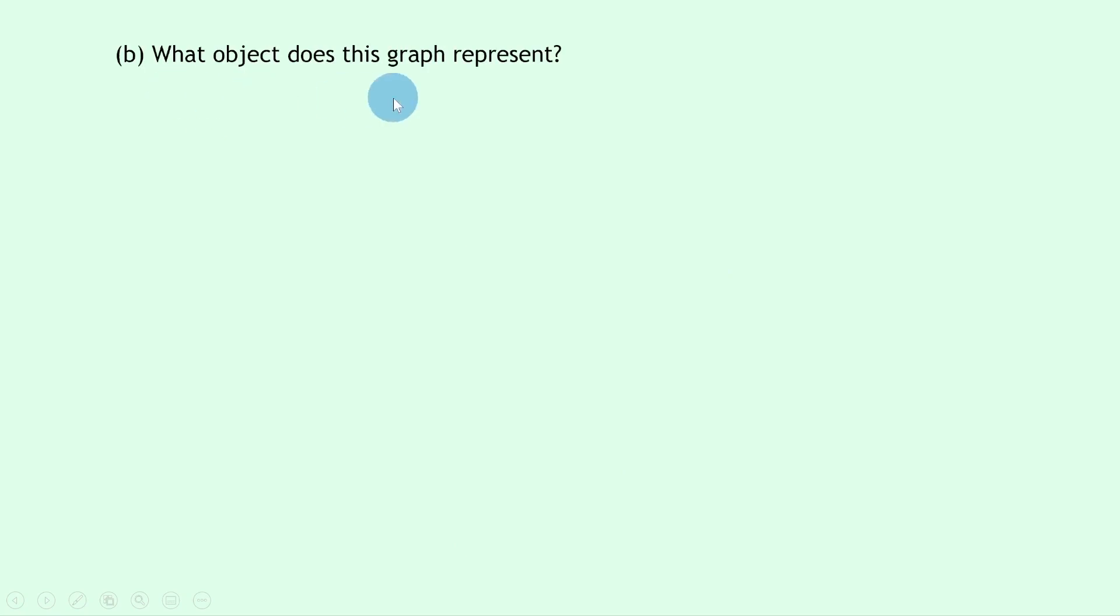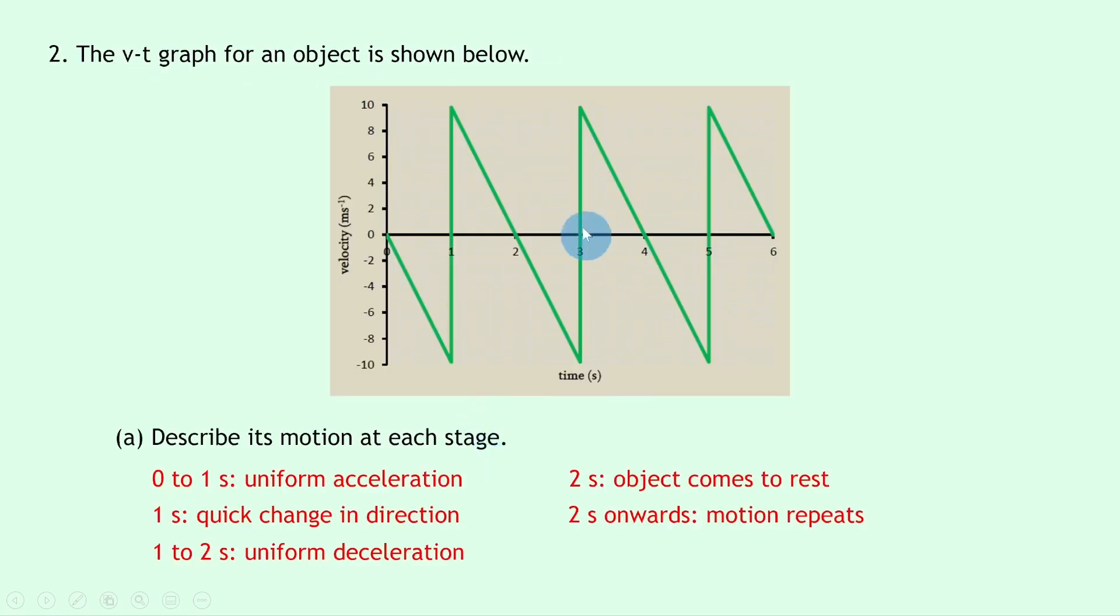Part B says what object does this graph represent? Well looking back at our graph and our descriptions, an object that's going to accelerate uniformly and then undergo a quick change in direction and then decelerate uniformly to rest and then repeat that motion could be the velocity time graph for a bouncing ball.